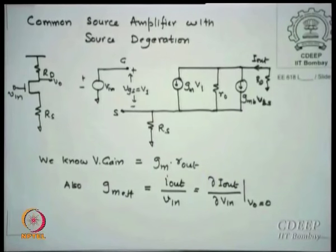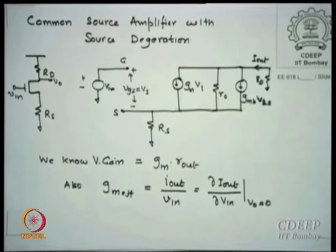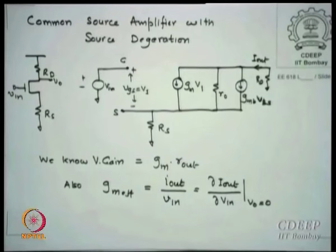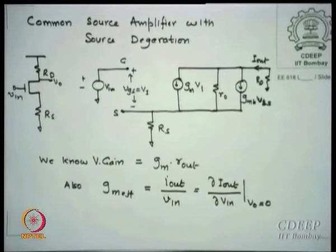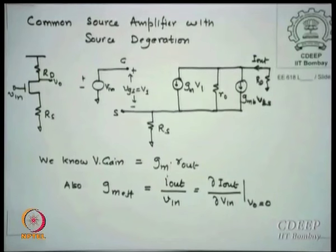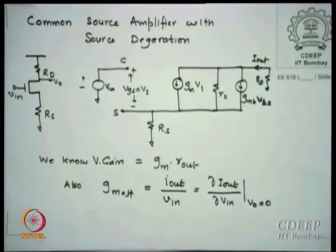Let us start with the common source amplifier with source degeneration — there is a resistance in the source, and this is popularly known as source degeneration. This is the equivalent circuit I draw from Razavi's book. I like Razavi's technique because it explains from each node to each node what is happening in the real circuit. This is a straightforward equivalent circuit of a MOS transistor along with other resistors.